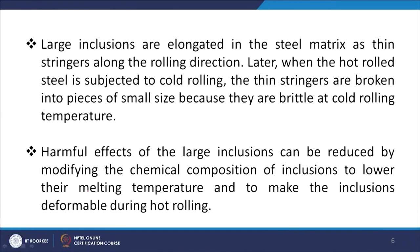When these hot-rolled steels are further subjected to cold rolling, as temperature comes down the inclusions become brittle and break into small pieces, affecting the homogeneity of the component, impairing material properties, and potentially causing failure at those points. The harmful effect of these large inclusions can be reduced by modifying their chemical composition to lower their melting temperature.